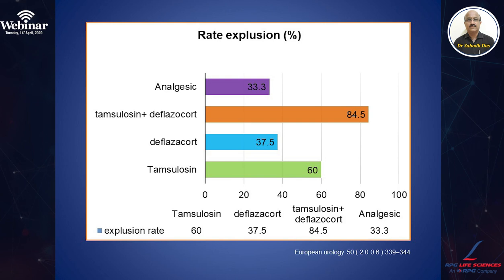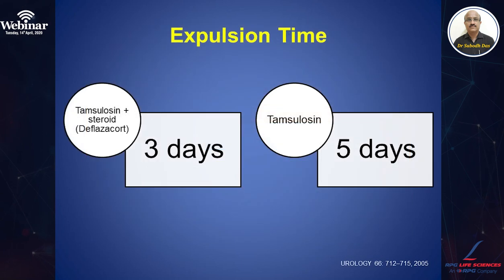So the combination of tamsulosin plus deflazacort is the most preferred combination. The average expulsion time with tamsulosin alone is five days, whereas with the combination of tamsulosin plus deflazacort, the expulsion time is three days.